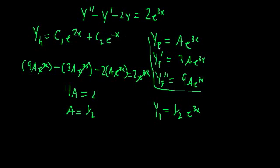The main takeaway from this example: if your non-homogeneous term is an exponential function, you should guess a scaled version of that same exponential function. When we take derivatives, we recover that function in each term, and when we plug in all the derivatives, they cancel out and leave that function remaining.